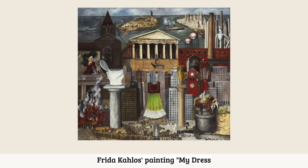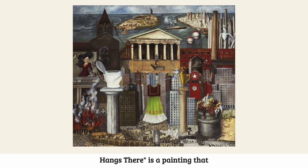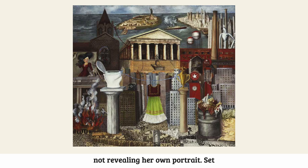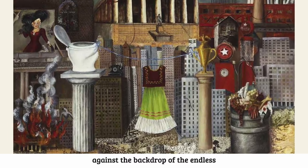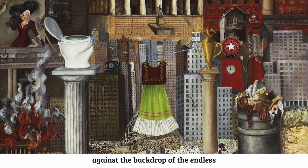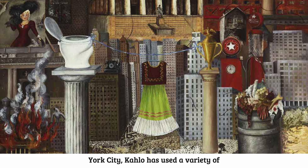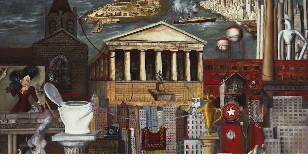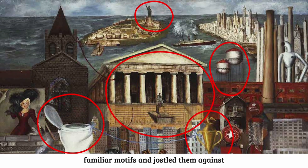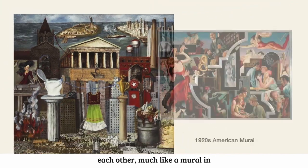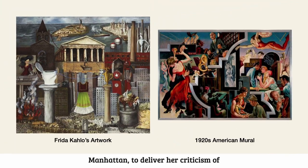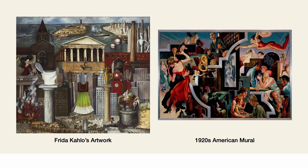Frida Kahlo's painting, My Dress Hangs There, is a painting that represents her unique identity despite not revealing her own portrait. Set against the backdrop of the endless office buildings and skyscrapers of New York City, Kahlo has used a variety of familiar motifs and jostled them against each other, much like a mural in Manhattan, to deliver her criticism of American culture and its way of life.